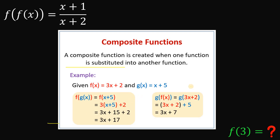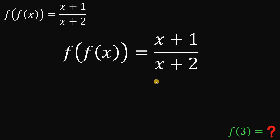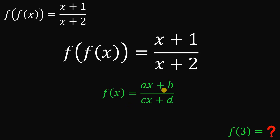We can also get g of f of x, which is equivalent to g of three x plus two, giving us three x plus seven. That is the composition of functions. Now, in our given condition, f of x is not a simple linear or quadratic function — it is technically a rational function.